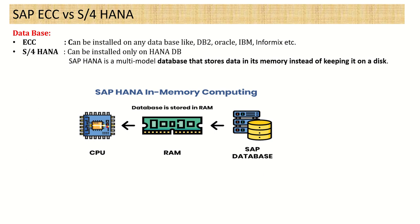If you are making some analytical report to analyze two years of data, the system takes a lot of time. To solve this performance issue, in S4 HANA, SAP has used HANA DB. In SAP S4 HANA, there is only one DB possible and that is known as the HANA database.